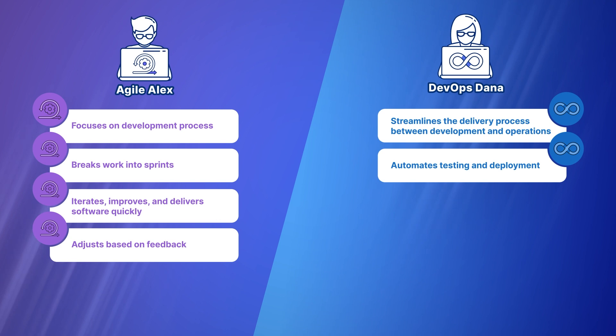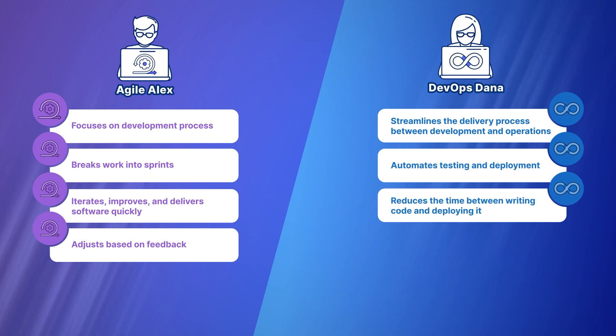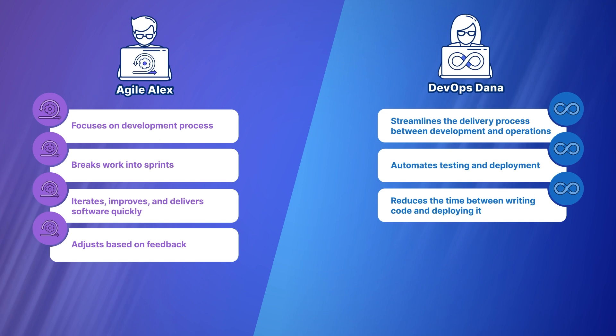Alex has to deliver a working product as early as possible to get customer feedback. And Dana has to reduce the time between the commit and writing of code and the deployment so that Alex can get his feedback quicker. Even if it doesn't go into production, he's got to be able to provide something back to his customer through user acceptance testing or, better yet, into production. And so it's Dana's job to automate and deploy that.